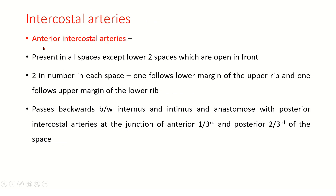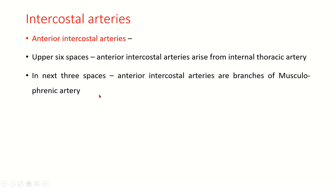Anterior intercostal arteries are present in all spaces except the lower two spaces which are open in front. There are two anterior intercostal arteries in each space — one following the lower margin of the upper rib and the other following the upper margin of the lower rib. They pass backward between internus and intimus and anastomose with posterior intercostal arteries at the junction of anterior one-third and posterior two-thirds of the space. In the upper six spaces they arise from the internal thoracic artery, and in the lower three spaces they arise from the musculophrenic artery.